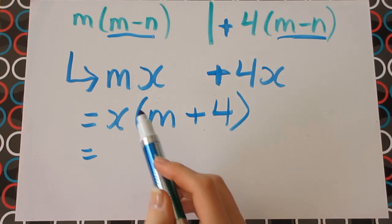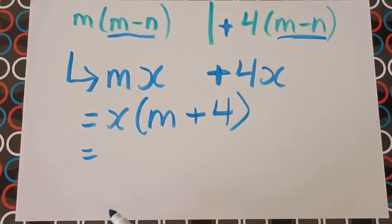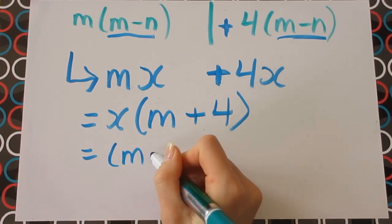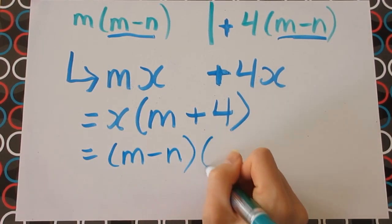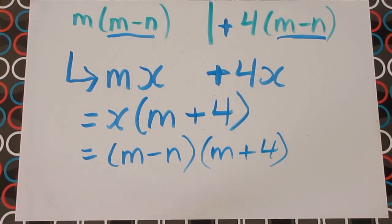And if we go back and replace our x with the original m minus n that we took out, we're left with m minus n multiplied with m plus 4. And that's the exact same answer that we obtained before.